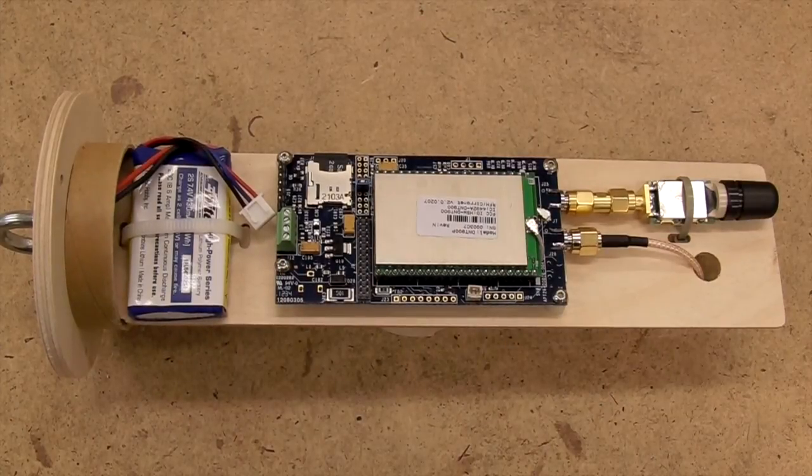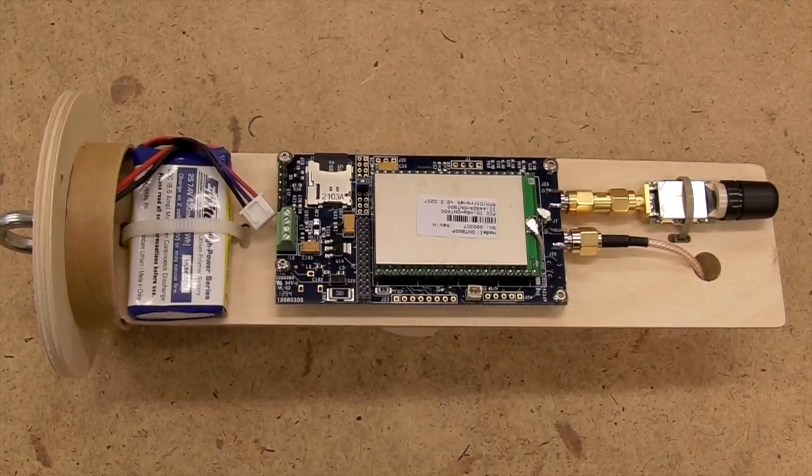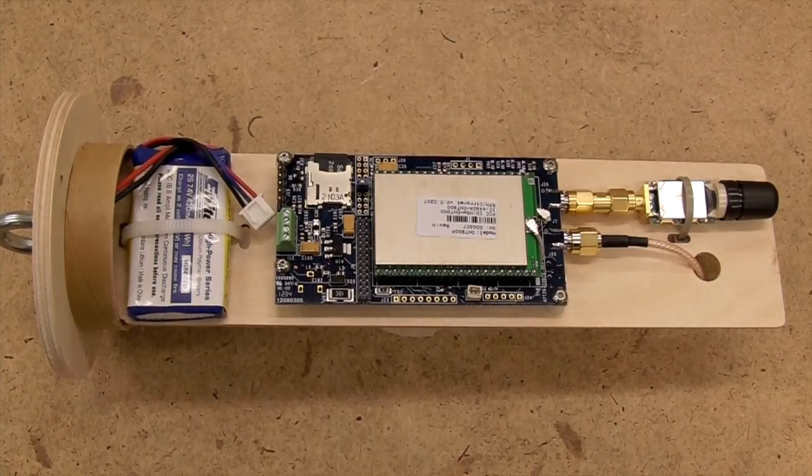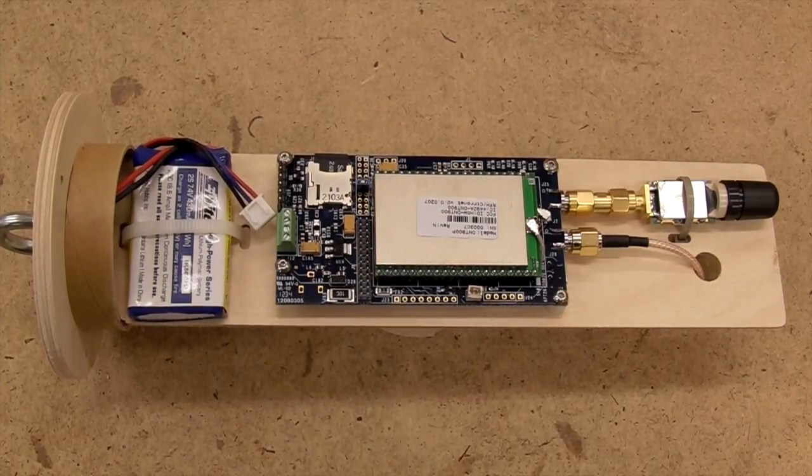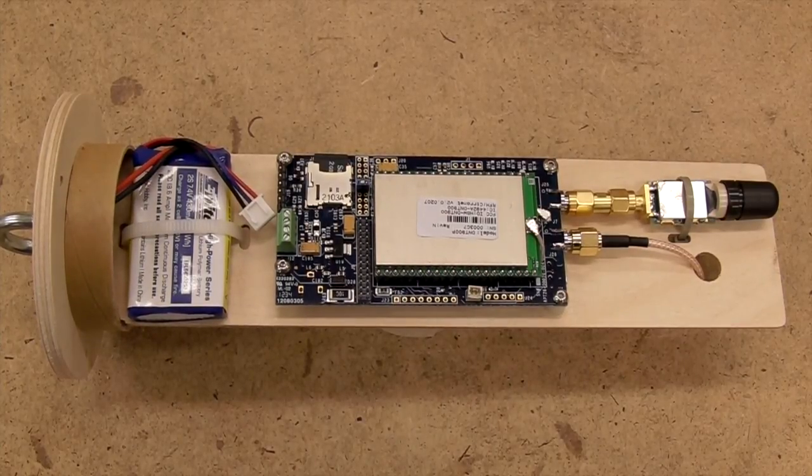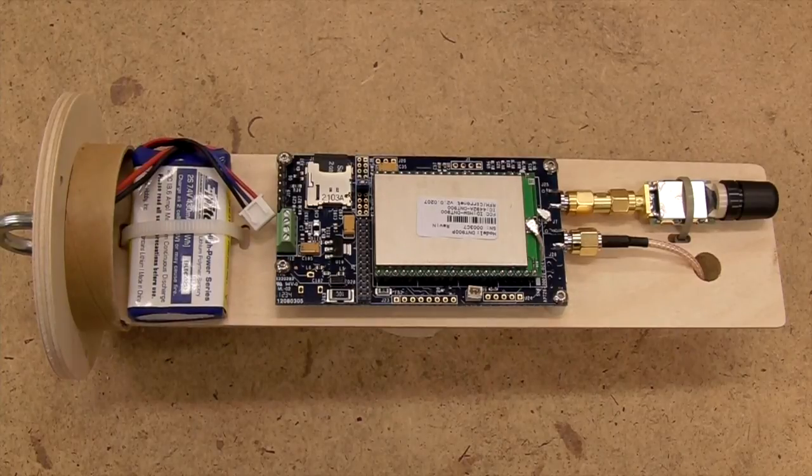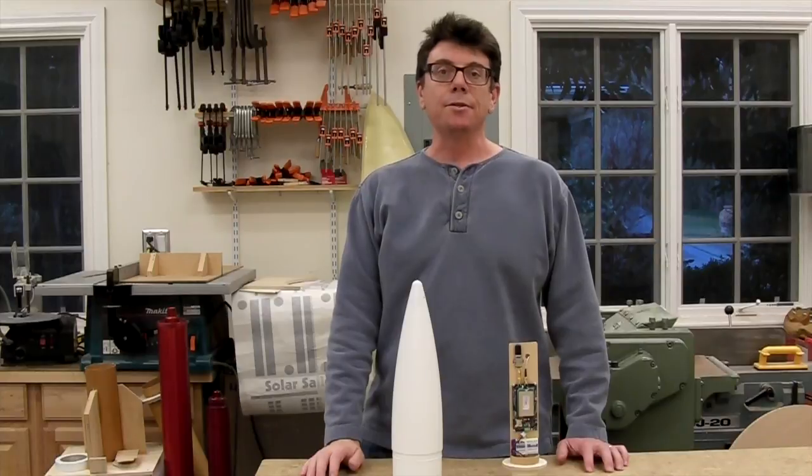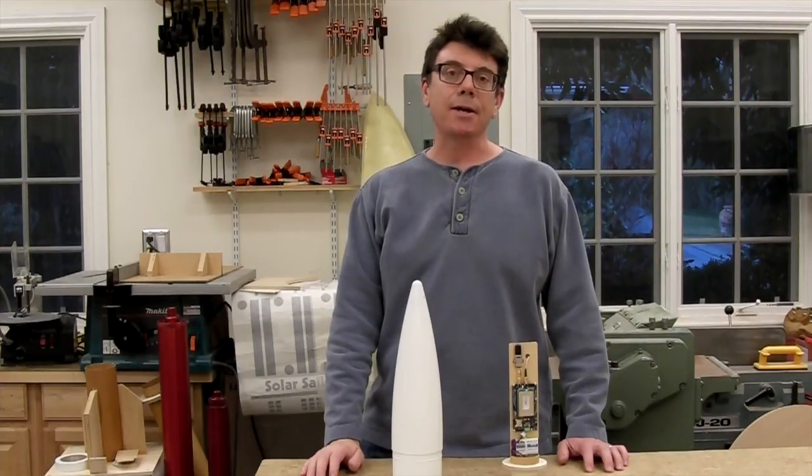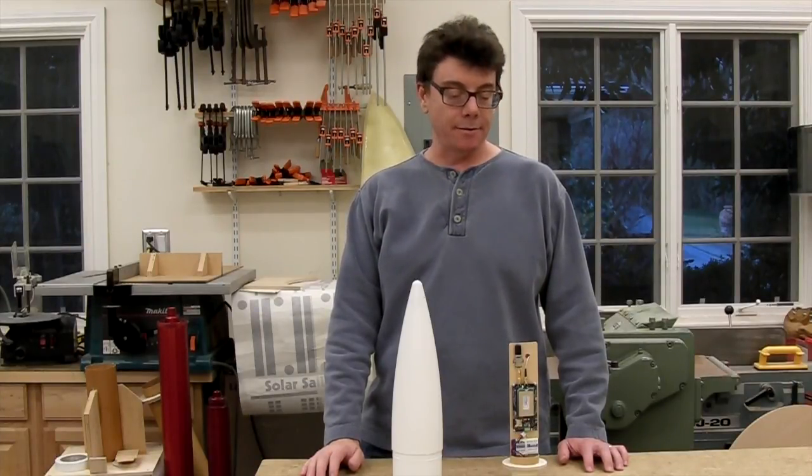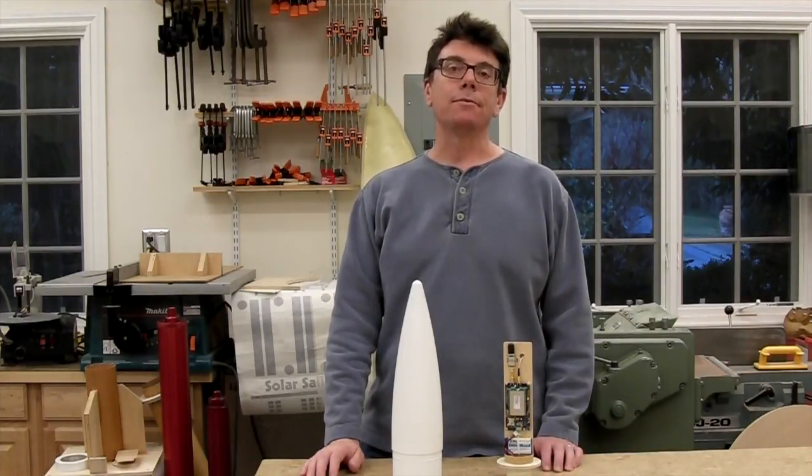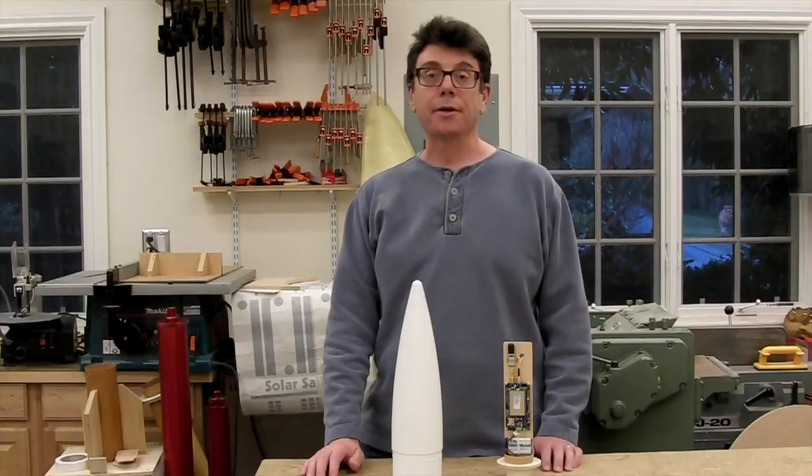And once the epoxy is cured, we can populate the electronics bay with whatever parts we need. In this case, I've decided this bay is going to host a real-time GPS unit, which naturally is a good fit in the nose. So I hope this video has been useful and given you some ideas about how to take better advantage of a nose cone than just how to be the front of your rocket. If you make your bays carefully, you can actually move them from rocket to rocket and share your electronics.